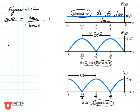Let's see what the standing wave ratio is for the short-circuited line. Vmax is 2V0+ and Vmin is 0. The standing wave ratio for a short-circuited line is infinity.